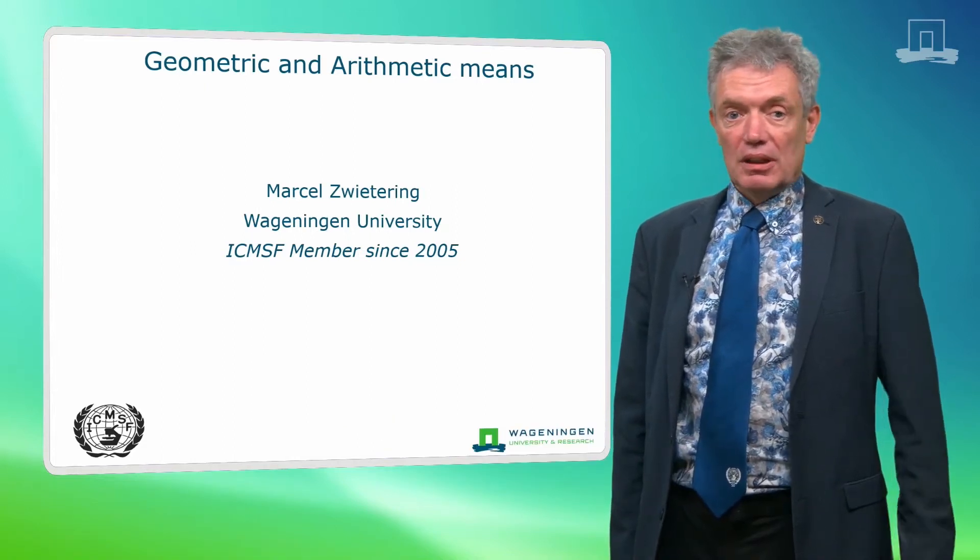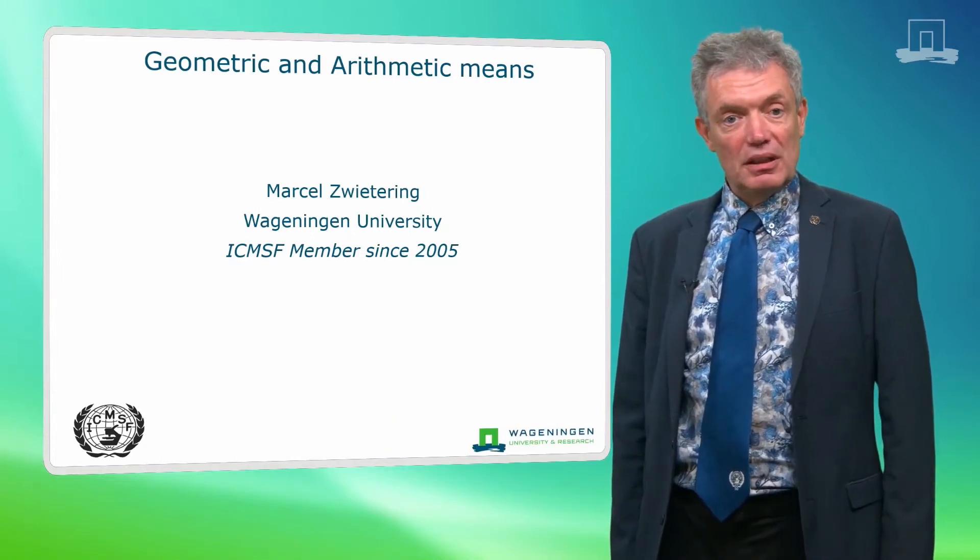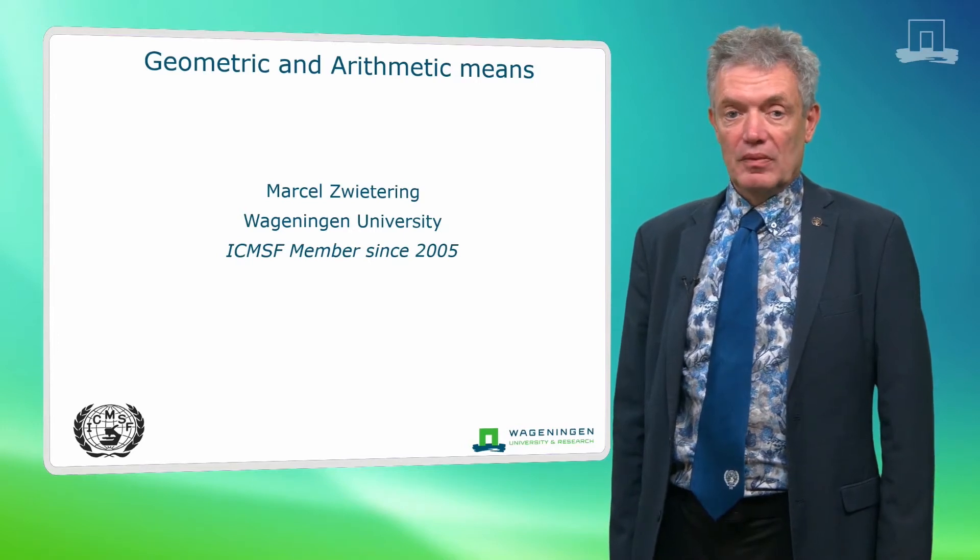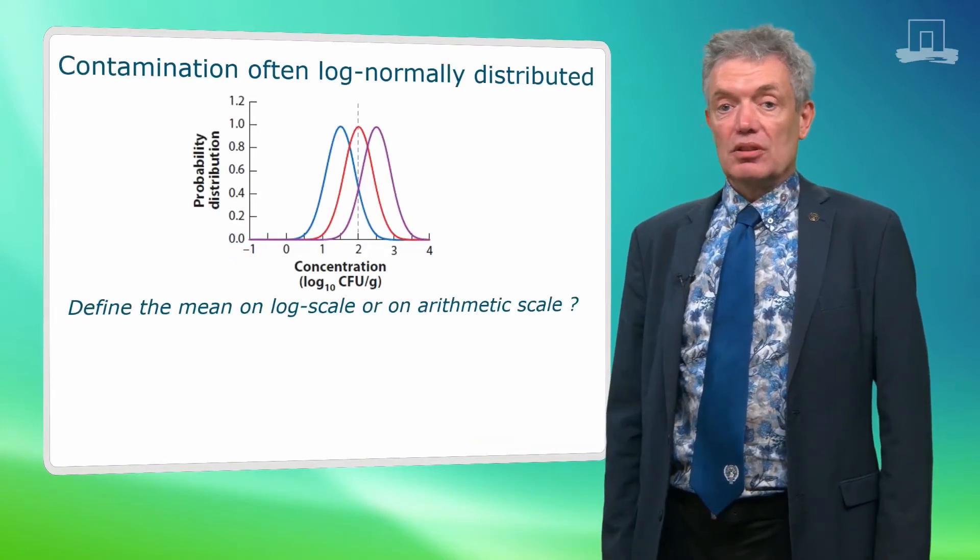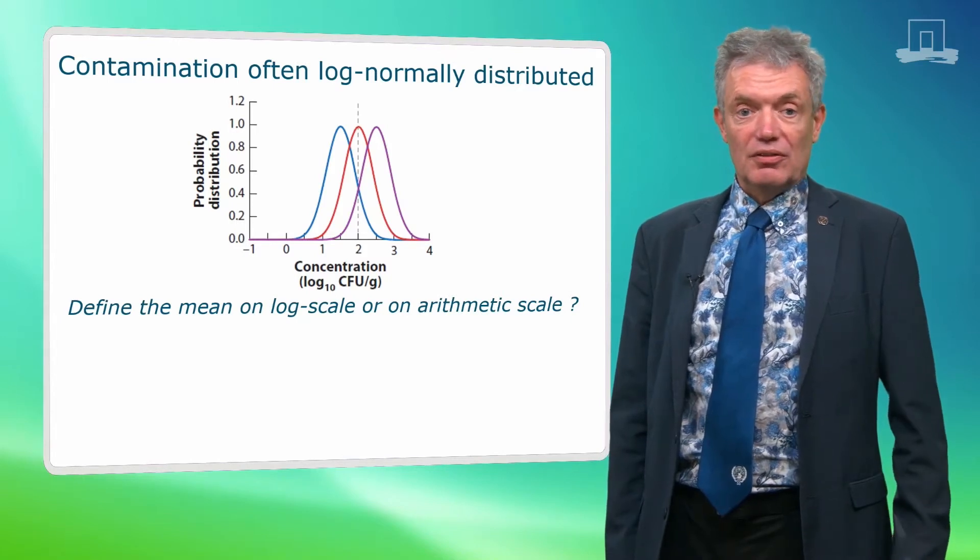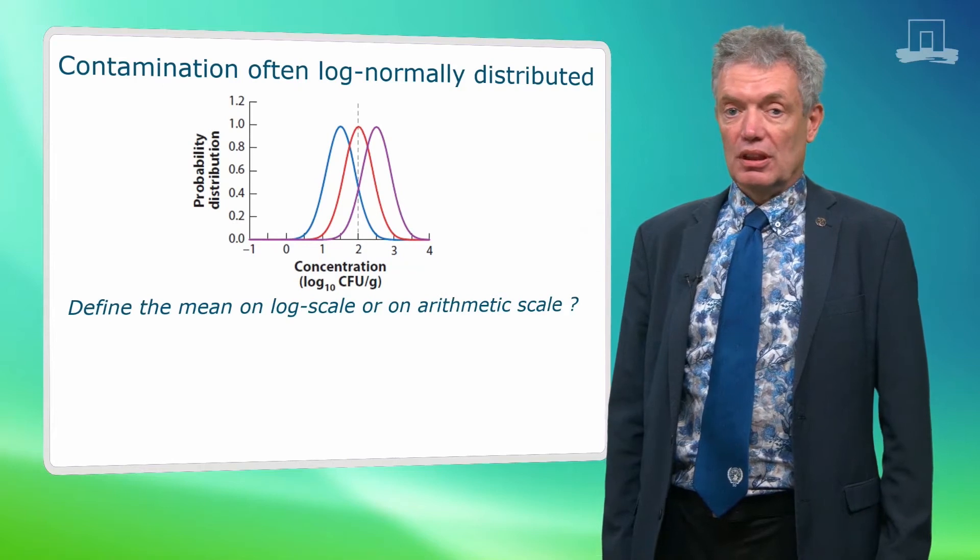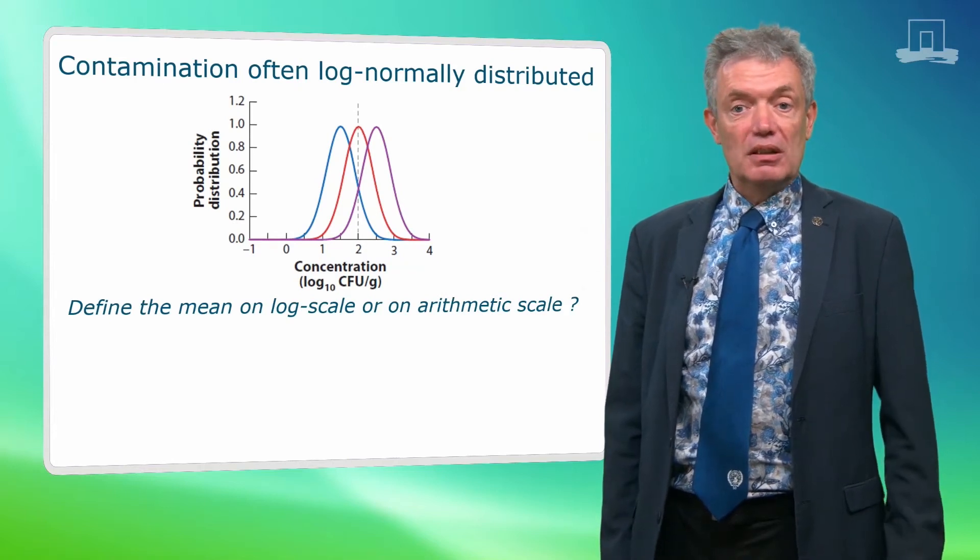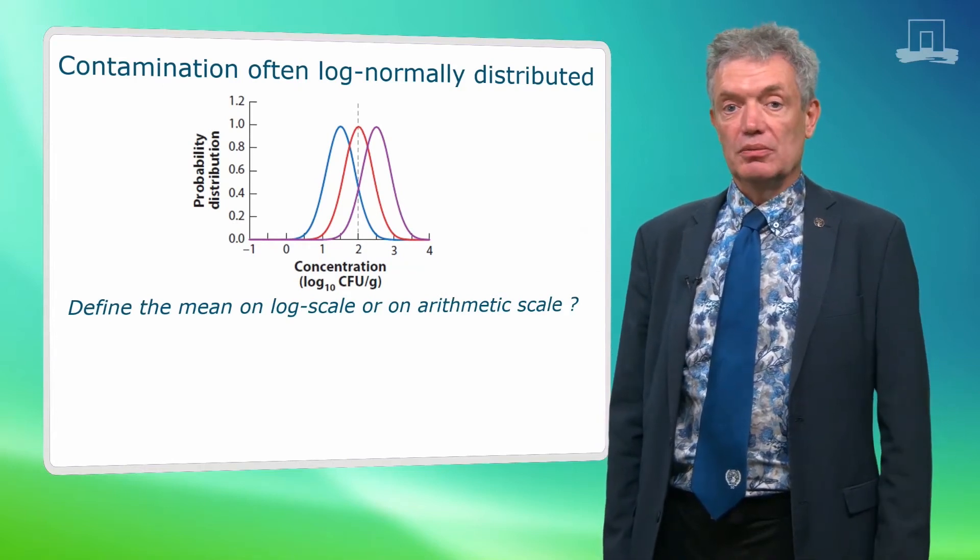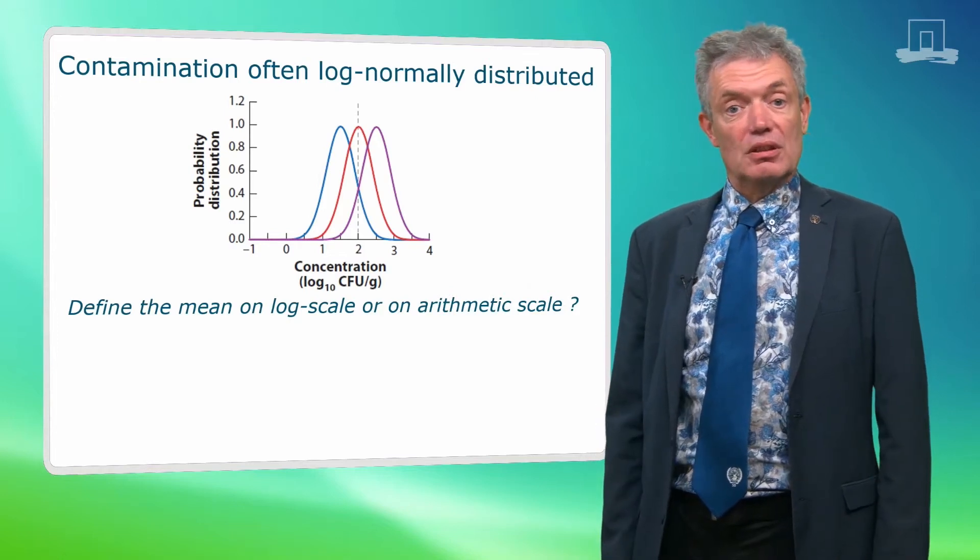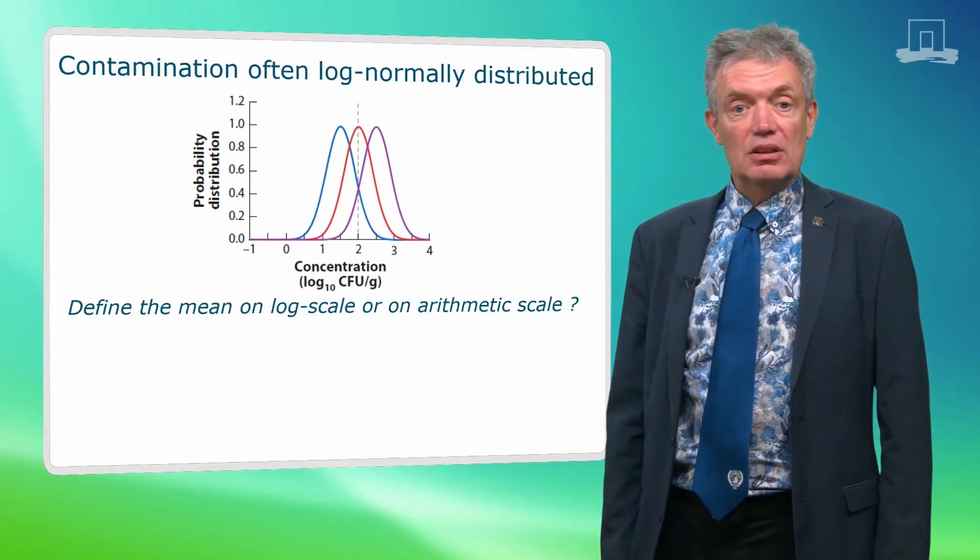In this clip I will illustrate the difference between the geometric and the arithmetic mean. Microbial contaminations are often log-normally distributed and this means that if we plot the probability distribution of the log of the microbial concentrations we get the expected bell-shaped curve of the normal distribution. This is convenient for statistical treatment and representation of the data.